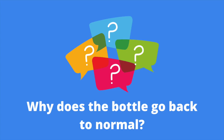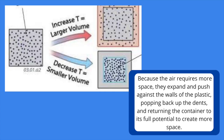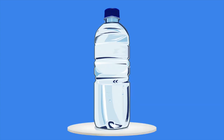But how does the bottle go back to normal? Because the air requires more space, the particles expand against the walls of the plastic, popping back the dents and returning the container to its full potential to create more space. And so after a while, it's like you have a brand new bottle.